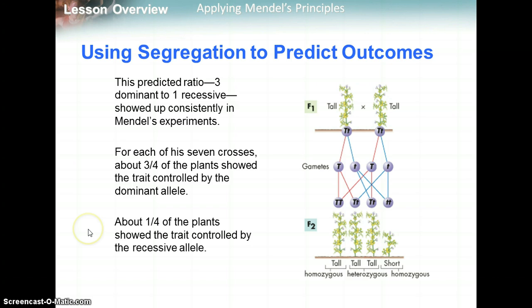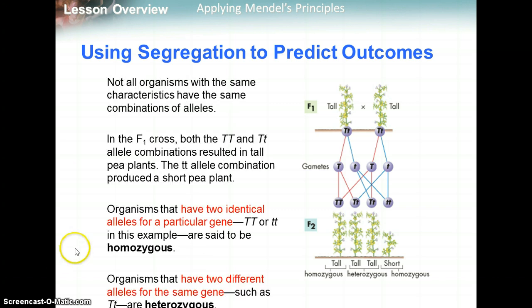This predicted ratio of three dominant to one recessive showed up consistently in Mendel's experiments. For each of his seven crosses, about three-fourths of the plants showed the trait controlled by the dominant allele, and about one-fourth showed the trait for the recessive allele — the short plants.